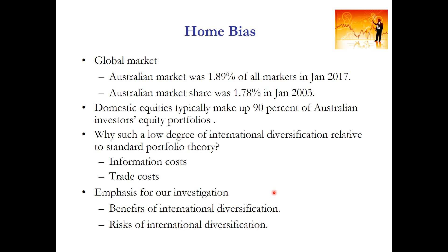There are also some other additional reasons why the home bias exists. One of those reasons is regulatory. Some markets actually prevent foreign investors from accessing these markets. China, for example — there are some restrictions on foreign investors buying particular classes of shares in Chinese markets. In the case of other markets, they might place some restrictions on the magnitude or size of investments that can be made by foreign investors. All these constraints do incentivize investors to look at their home market.